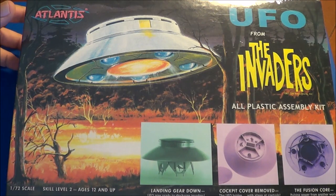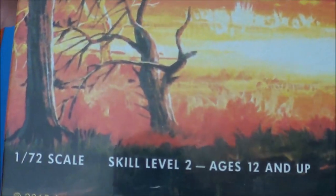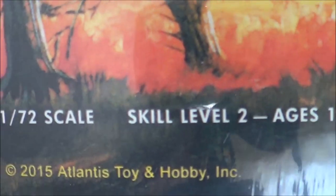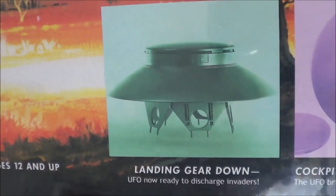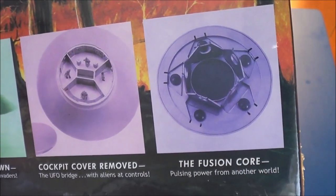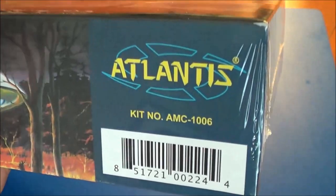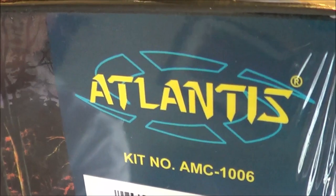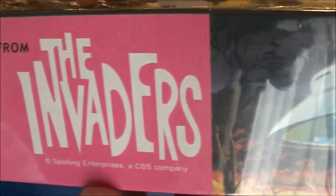Let's get a closer look at the box art. It is 1:72 scale, skill level 2, and you can see the release was this year in 2015. Landing gear pods, full interior and fusion core. Now it's in the Atlantis boxing instead of Aurora. This is the original box art that Aurora came out with back in 67, 68.